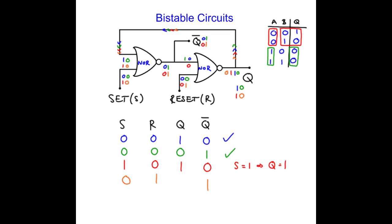So q becomes 0 and everybody's happy. So when the reset is 1, then q has to be 0. So our bistable is happy in these two states. That's the bistable. The set causes q to be 1. The reset causes q to be 0.